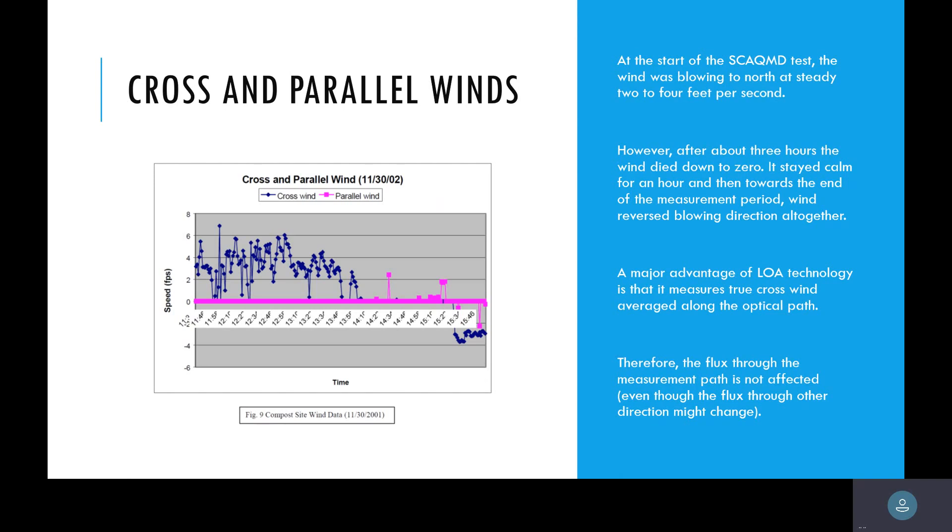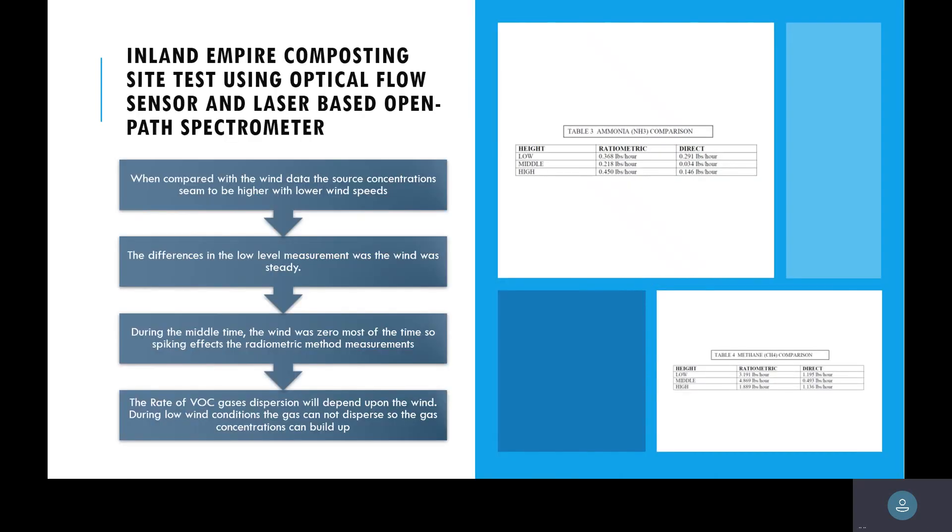There was a direct measurement that used a radiometric method, which is basically just collecting a sample all the time. They assumed that the wind was always constant, which is not really the best way to do it. Then there was a direct measurement where they used a TDL that was measuring CH4 and NH3. What we learned is winds are seldom constant. What you noticed is at the start of the test, the wind was blowing north at a steady 2 feet per second, right? Then after about 3 hours, the wind died down to zero, and then it stayed calm for an hour, and then towards the end of the measurement period, the wind reversed blowing directions altogether.